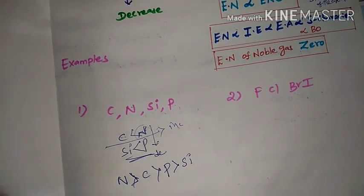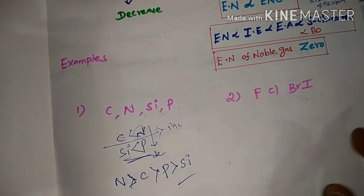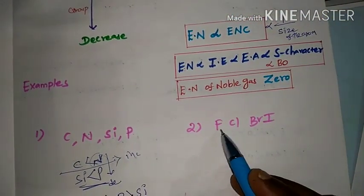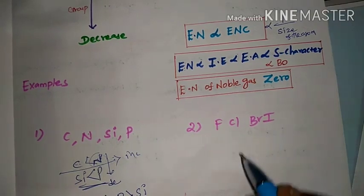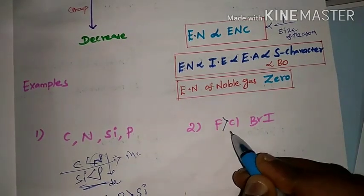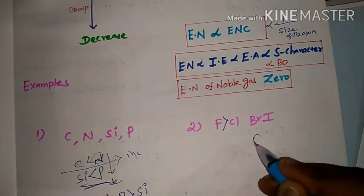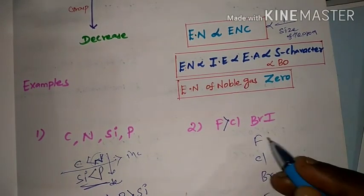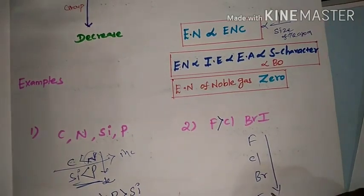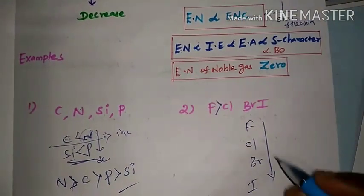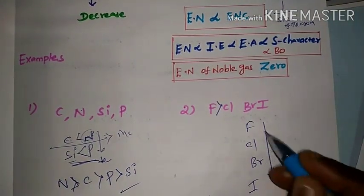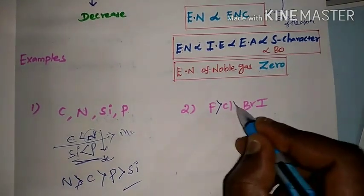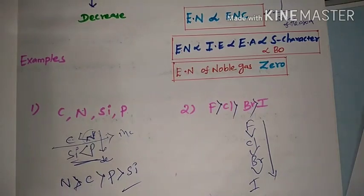The next one: Fluorine, Chlorine, Bromine, Iodine. These are halogens. From top to bottom, electronegativity decreases — so the order is Fluorine > Chlorine > Bromine > Iodine. That is the electronegativity trend.